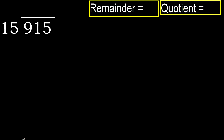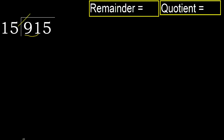915 divided by 15. 9 is less, therefore next. 91 is not less, therefore work with 91. 15 multiplied by which number is nearest to 91?